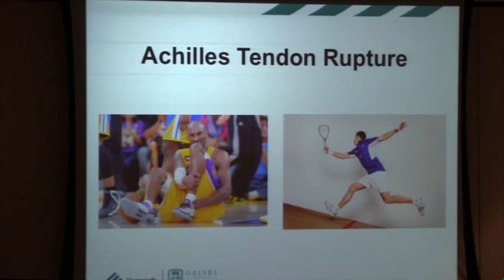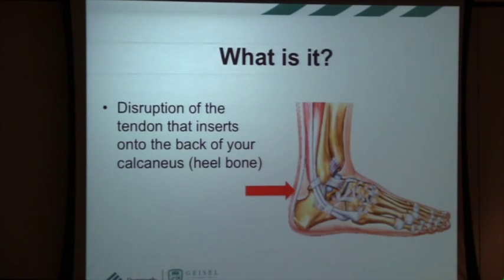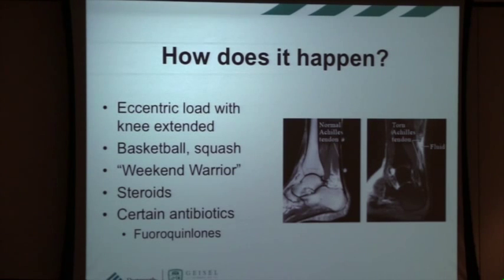Now we'll talk about Achilles tendon ruptures — famous ones and maybe less famous ones — seen in two big sports in particular. What is it? It's disruption of the tendon that inserts onto the back of your calcaneus and allows you to plantar flex, or push your toes down toward the ground. It connects to two major muscles: one that attaches on the back of your tibia and fibula, and one that goes across your knee joint and attaches on the back of your femur. This usually happens with an eccentric load with an extended knee — basketball, racquet sports, and especially squash are often culprits.